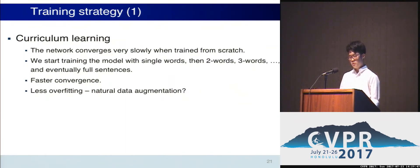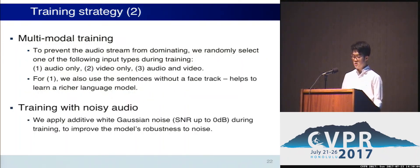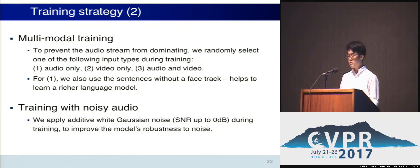Training the model requires a number of tricks. We use a curriculum learning strategy, where we start training the model with one word and let it grow to two, three words, etc., which makes training converge faster and produces less overfitting. Given that speech is a much stronger signal than lip motion, to stop the audio from dominating, we randomly drop one of the input channels. We also apply noise during training to help the network become more tolerant to noise.